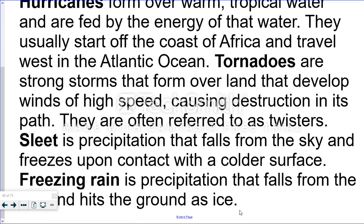Sleet is a type of precipitation that falls from the sky, and it freezes once it hits a colder surface. Sleet is what we sometimes refer to as black ice. You can't see it because it's rain that has just fallen, but the ground is so cold that it freezes upon contact. And then freezing rain is precipitation that falls from the sky and hits the ground as ice.